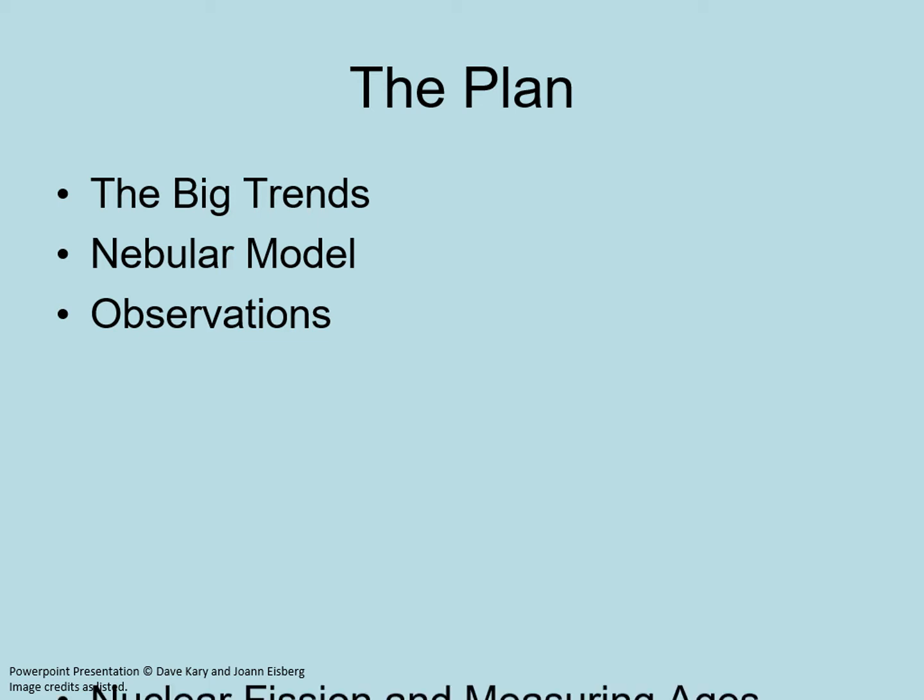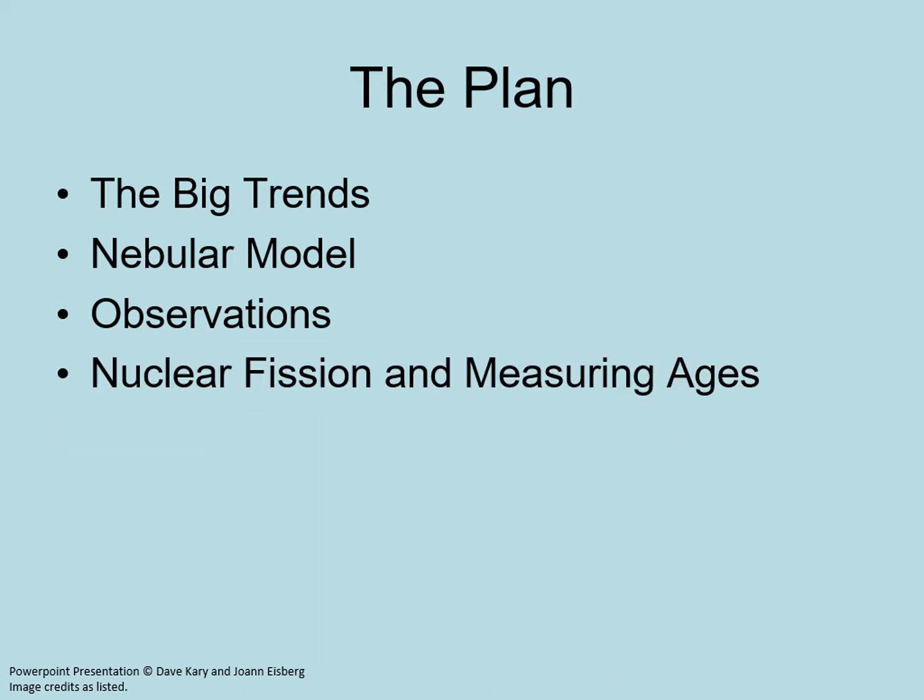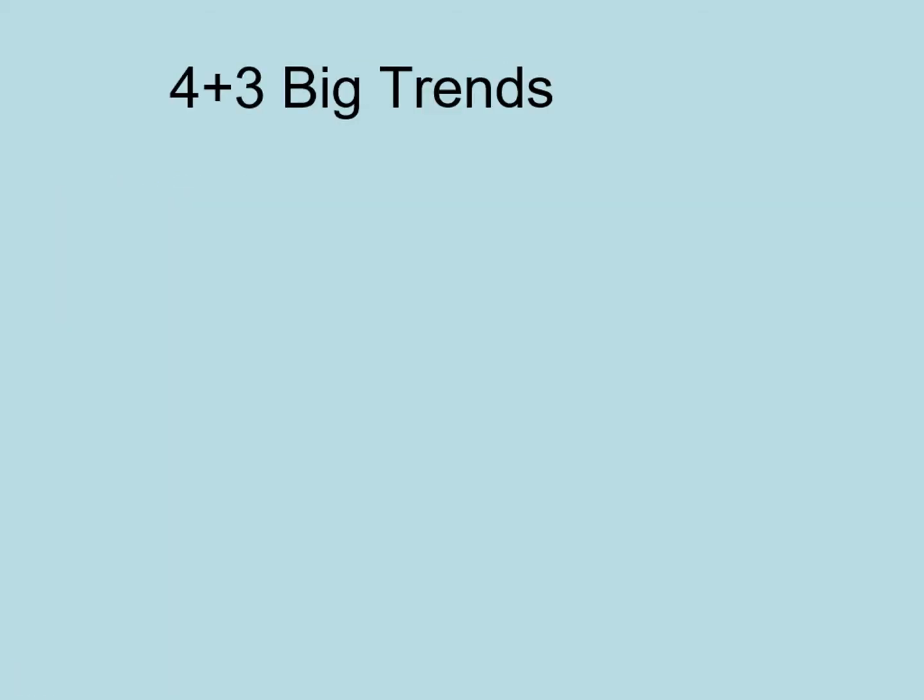Finally, we'll have a look at the question of when our solar system formed, using the information from the decay of radioactive elements. Let's review the four big trends we discussed in the last chapter and add a few others that will be relevant here.